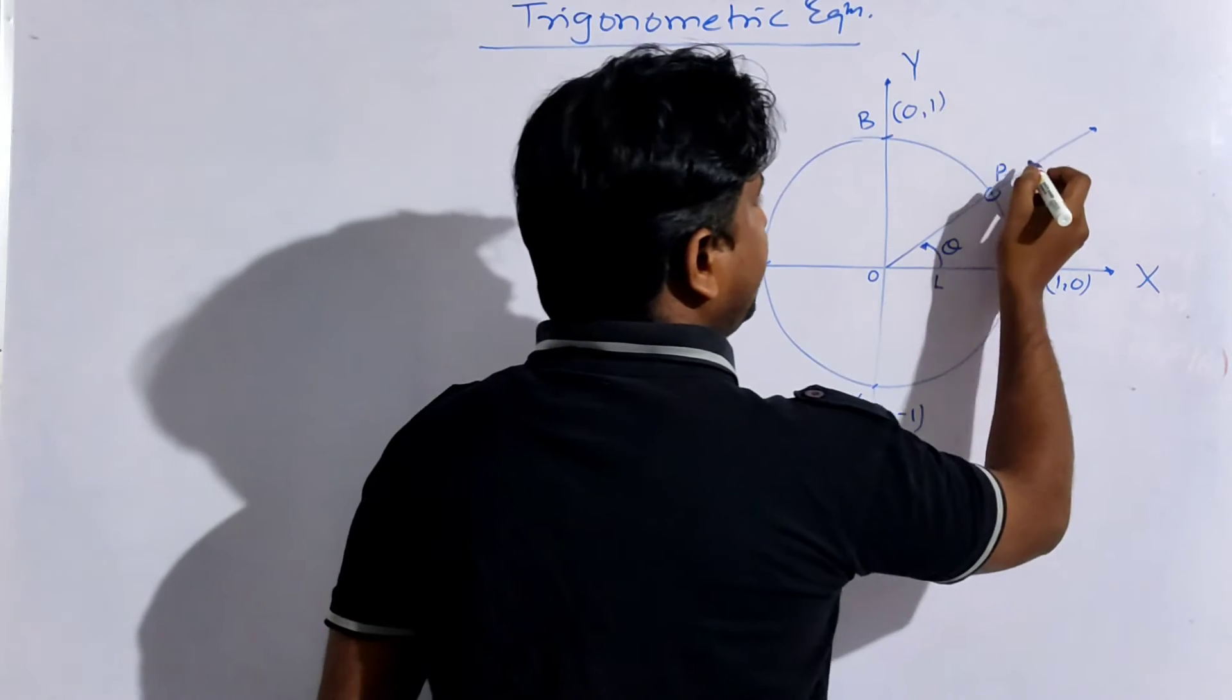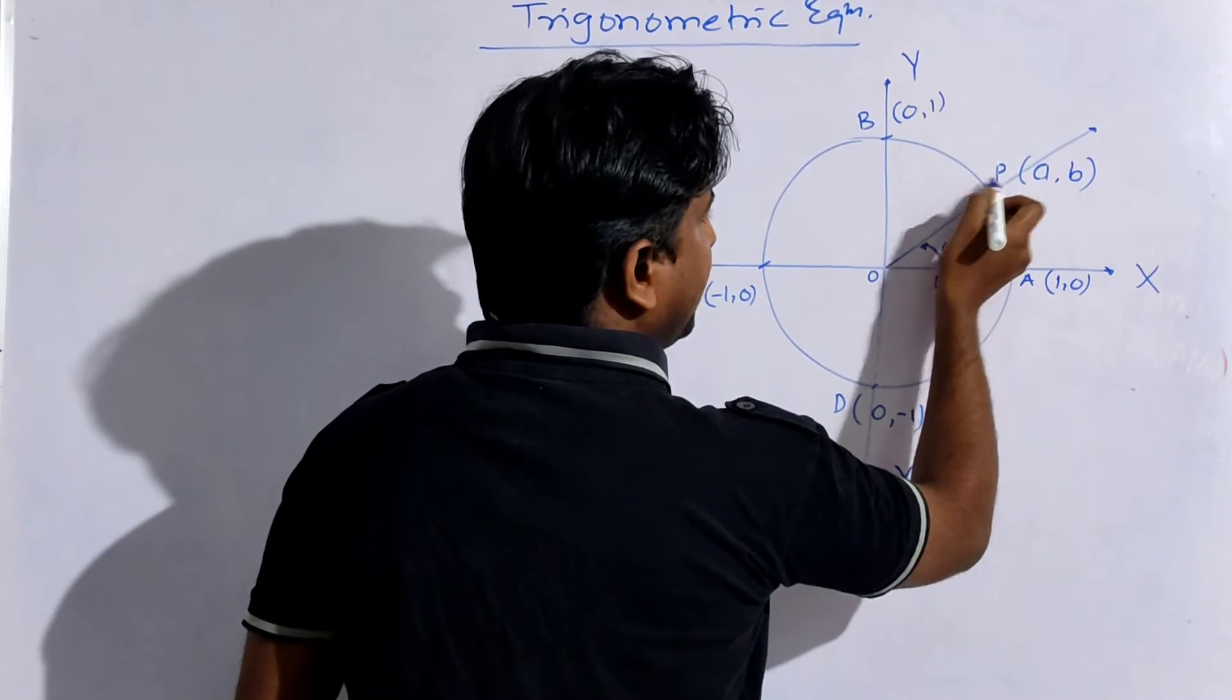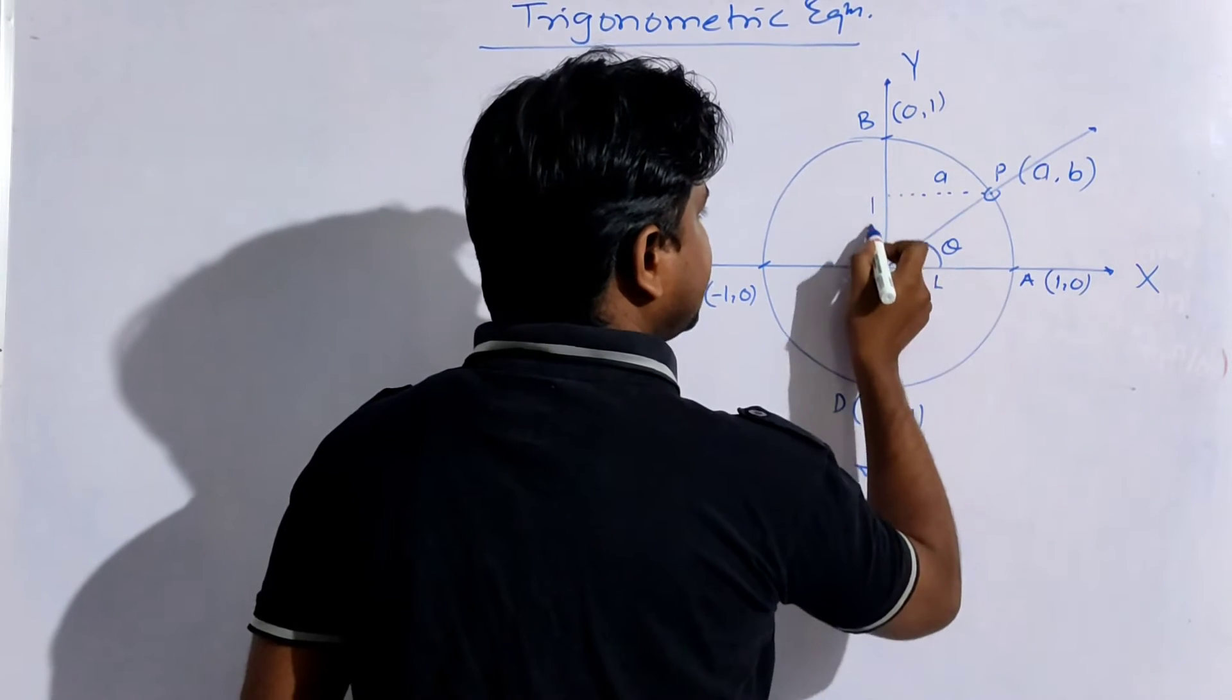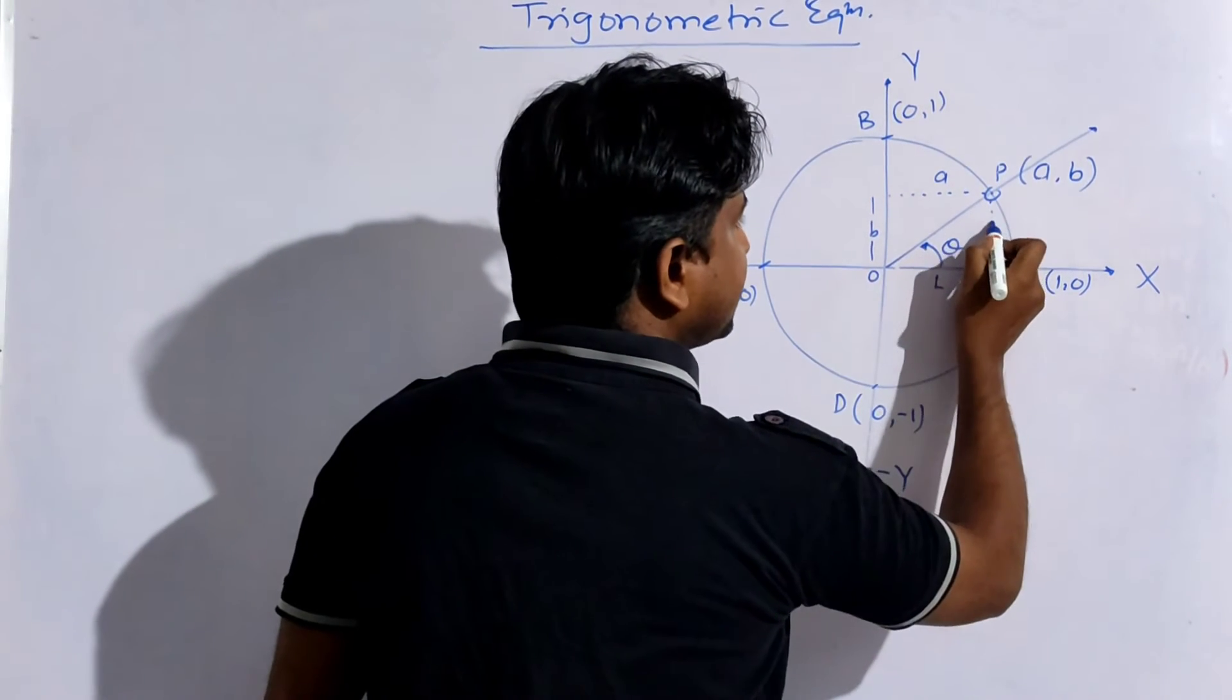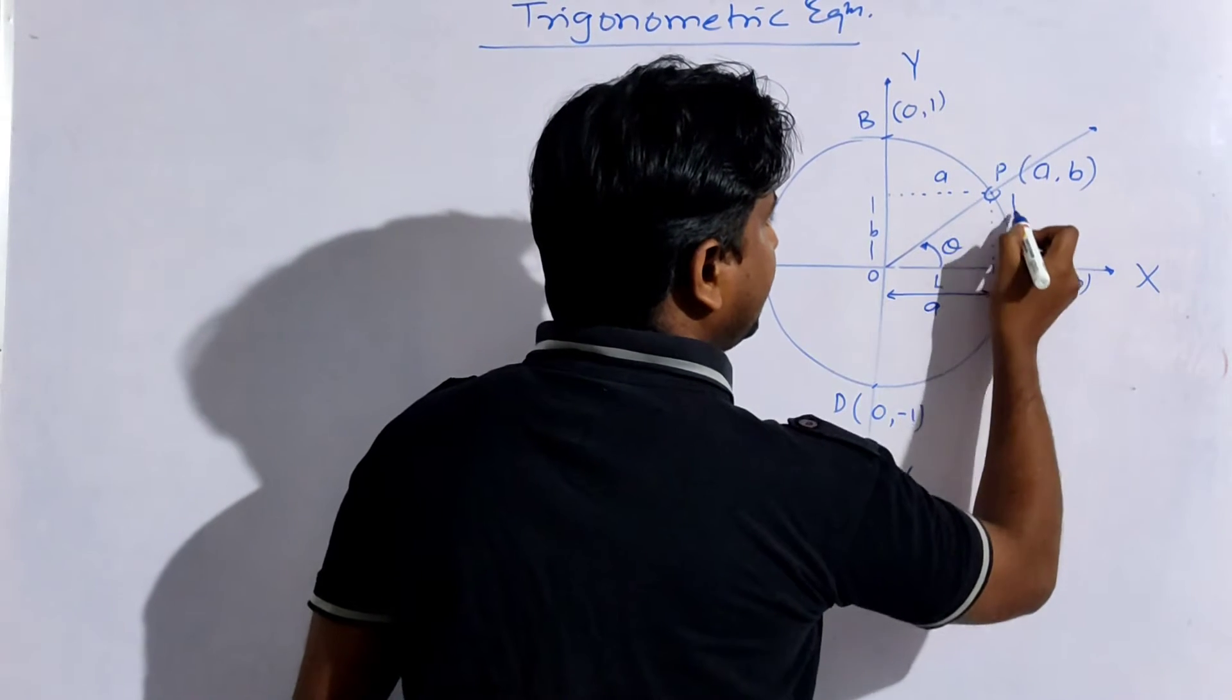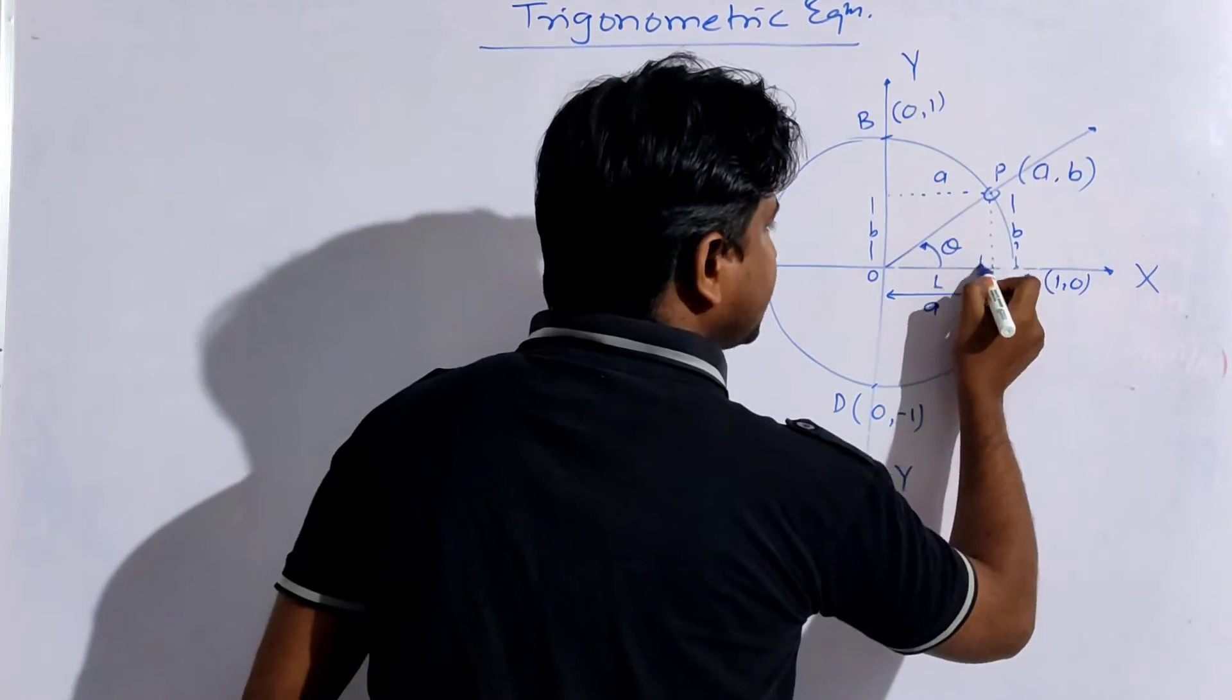Suppose this point P has coordinates (a,b). Now from this we understand that the distance of point P from the y-axis is a, and its distance from the x-axis is equal to b. This distance will be equal to a, and this will be equal to b. And obviously it is perpendicular.